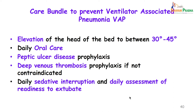The care bundle to prevent ventilator-associated pneumonia includes: elevation of the head of the bed to 30–45 degrees, daily oral care, peptic ulcer disease prophylaxis, deep vein thrombosis prophylaxis if not contraindicated, daily sedative interruption, and daily assessment for readiness to extubate. The goal of all these interventions is to remove invasive devices as soon as possible.